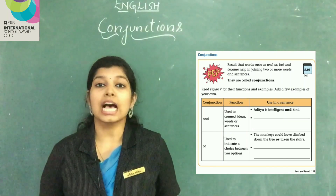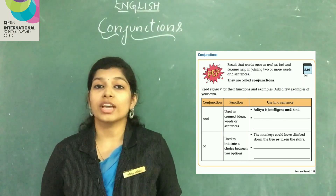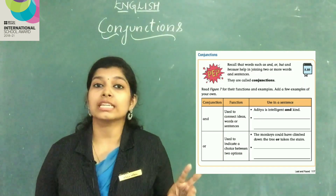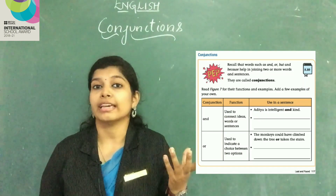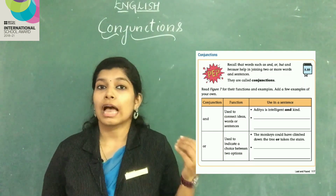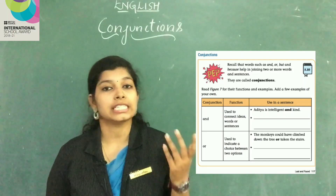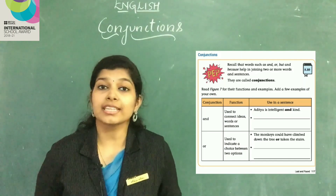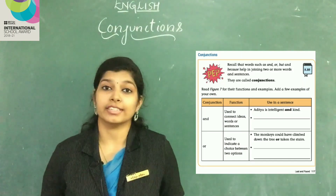We use 'and' when we are talking about two things at the same time. For example: I like both tea and coffee. She is smart and brilliant.